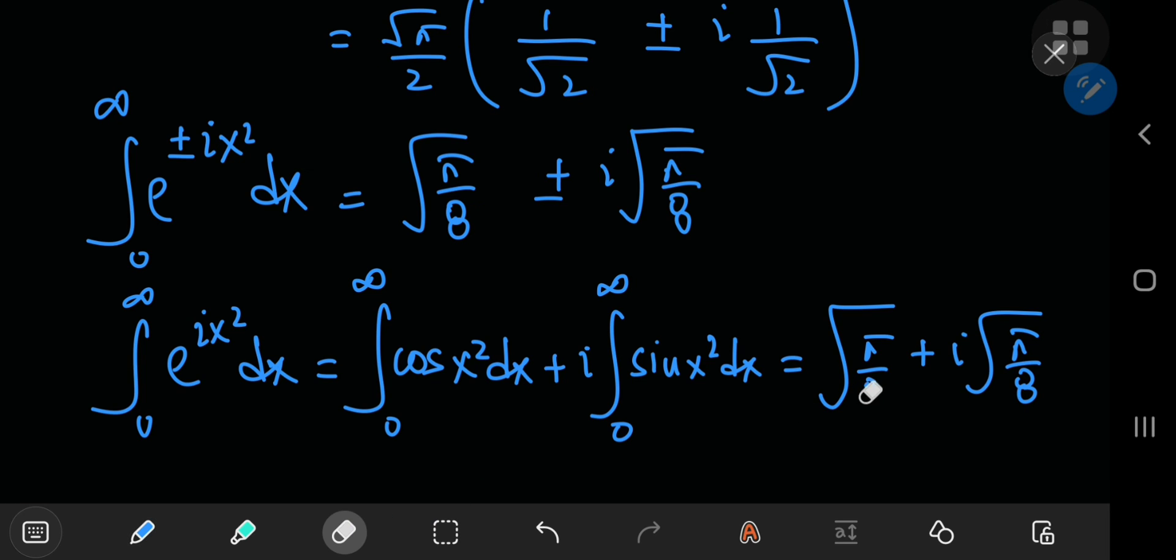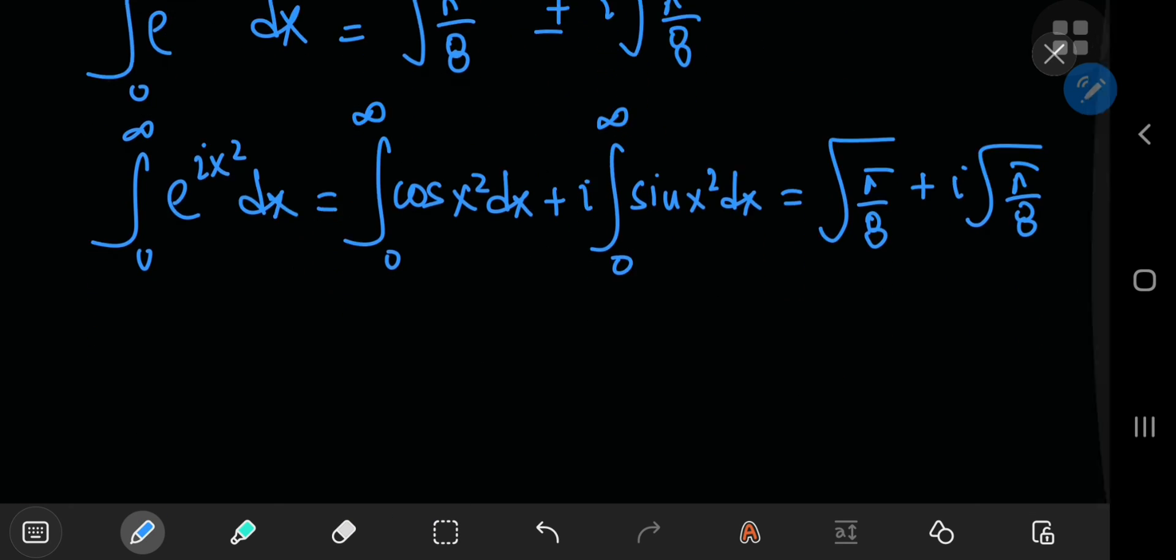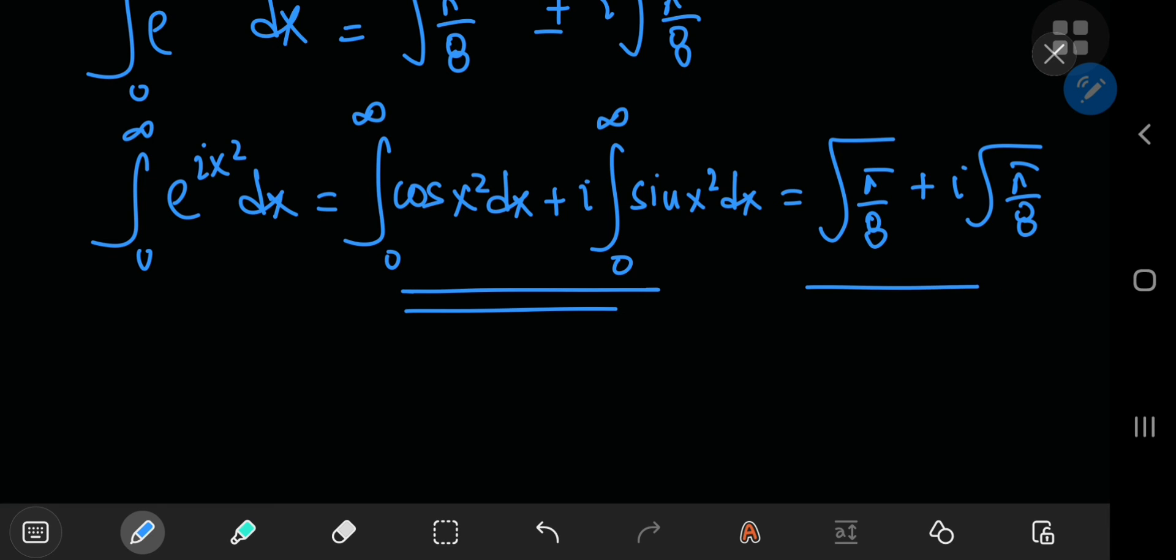And that is a horrible 8 over there. Sorry about that. So, we get the correct results. The integral from 0 to infinity of the cosine of x squared is equal to the integral from 0 to infinity of the sine of x squared.